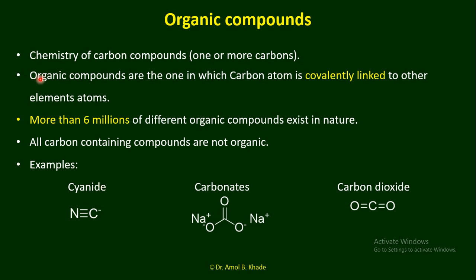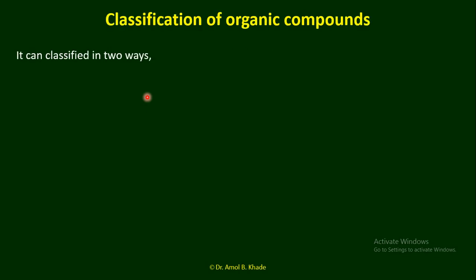Generally speaking, the definition is applicable: organic compounds are those in which carbon — one carbon or more than one — is covalently linked with other elements. One of the simplest examples is methane, CH4, where one carbon is linked with four hydrogens. Now we will come to the classification, which is again very important. These six million or more organic compounds can be classified in two ways.